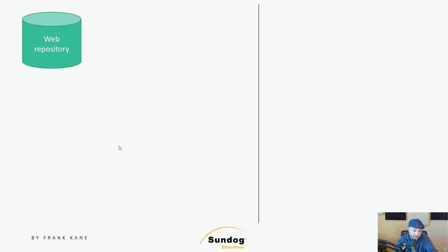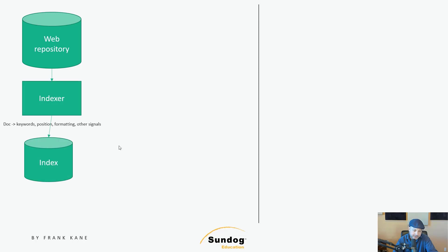We'll start with that repository of web pages that came from our crawler. Presumably this is compressed somehow so as not to take up ridiculous amounts of storage. Now we need to build up an index that maps keywords found in each page to the document it was found in, its position within the document, and whether it's a header or a title, and the other signals we talked about. Basically, this is a big key-value object store where the keys are keywords or more compactly keyword IDs, so that can be distributed. I think that's kind of what BigTable was made for at Google, but any modern NoSQL database should do.